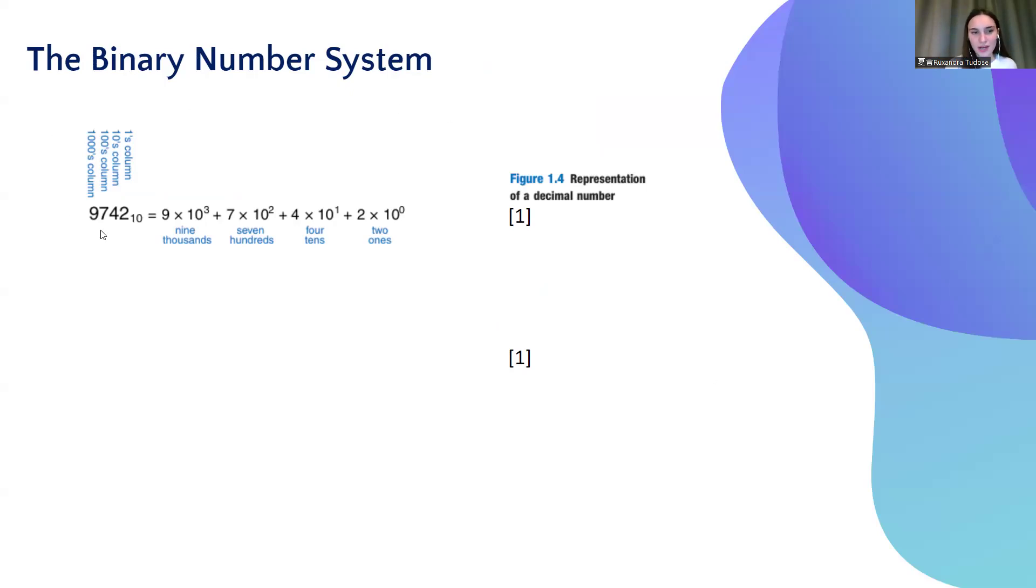So, right here, I have a decimal number. It can be a number I can recognize anywhere in everyday life. It's 9742. And if it's a number in decimal, then I know that it can be written mathematically as a sum of powers of 10, while decreasing the power of 10 from the left to the right.